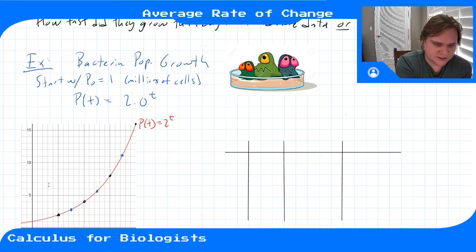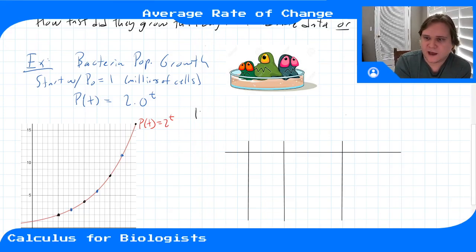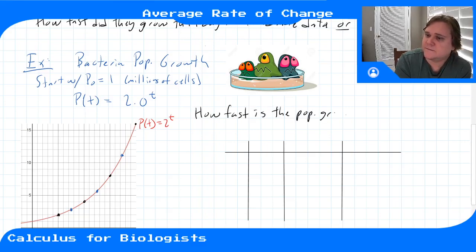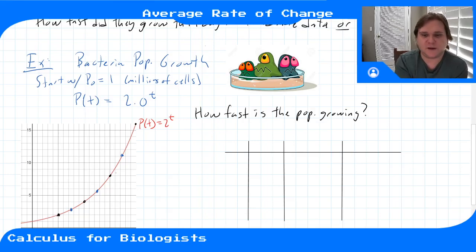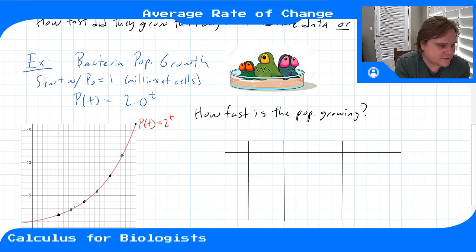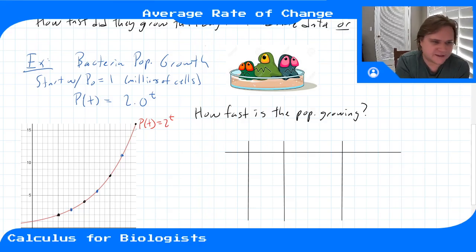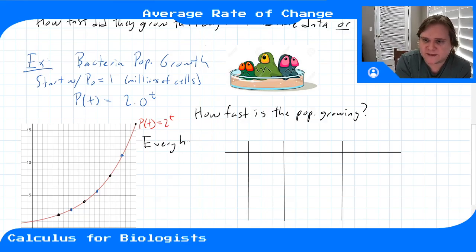So here it is graphed. We can get into average rates of change now that we have a nice function that describes what's happening continuously in time — not just at discrete points in time, but continuously at all times we know what the population is. So we can ask questions like: how fast is the population growing? Well, that depends on where we look. This is changing over time and it's not growing at the same speed at all times — it's slower here than there, getting faster as time goes up.